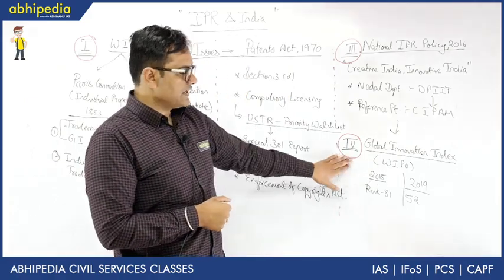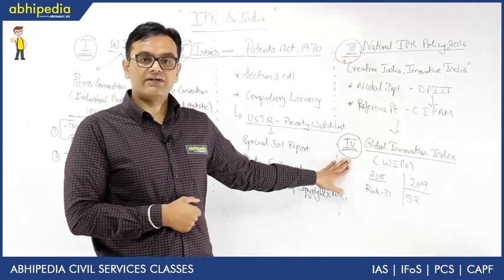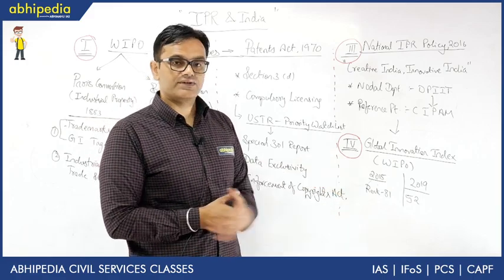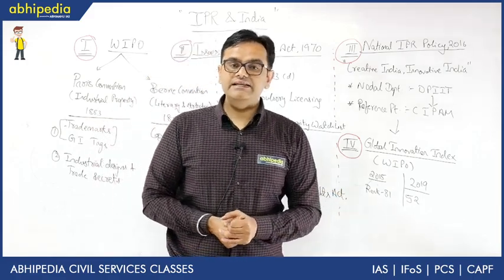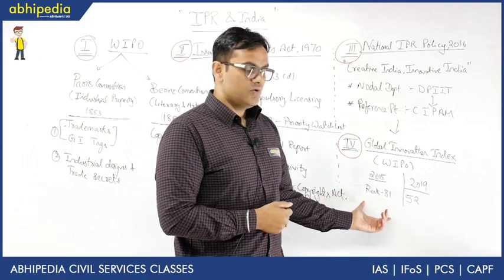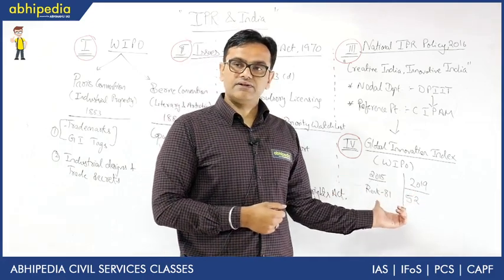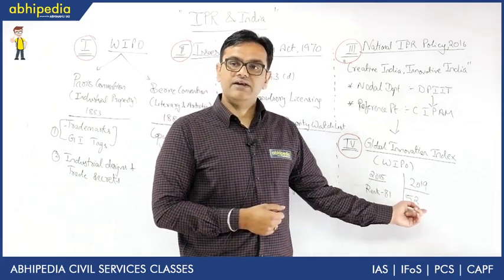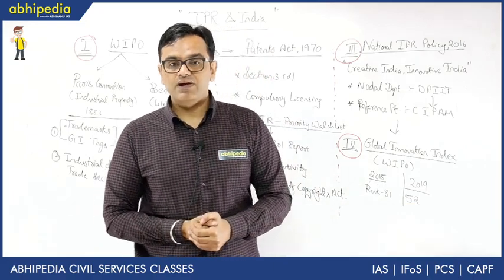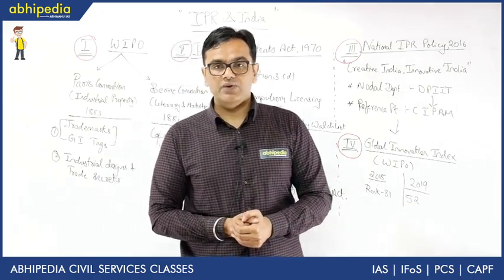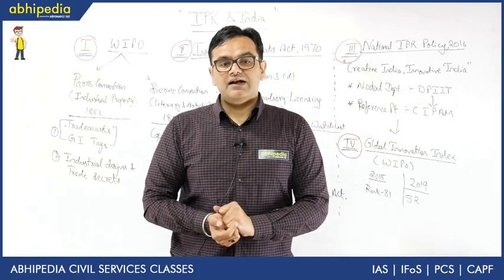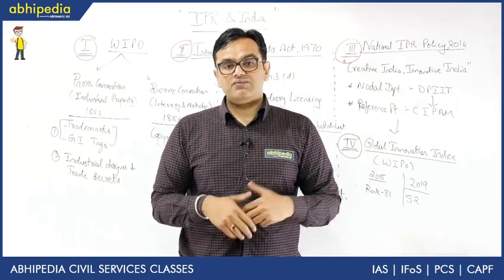The fourth aspect is the Global Innovation Index. The 2019 index reported that India remarkably improved from rank 81 in 2015 to rank 52 in 2019. This index is published by WIPO, the World Intellectual Property Organization, and it is important from the exam perspective.